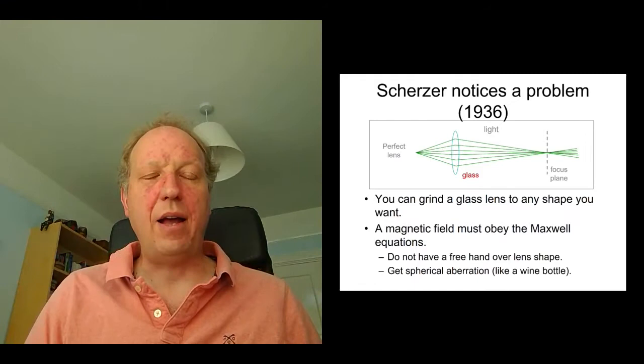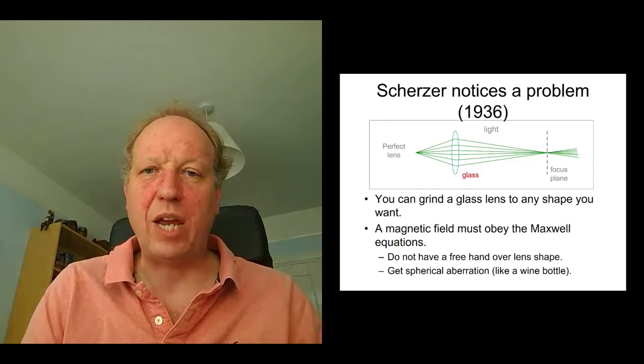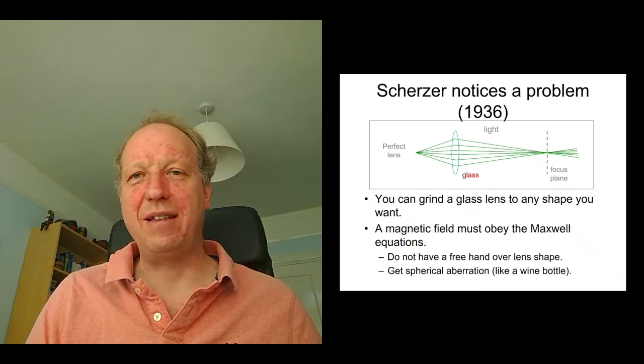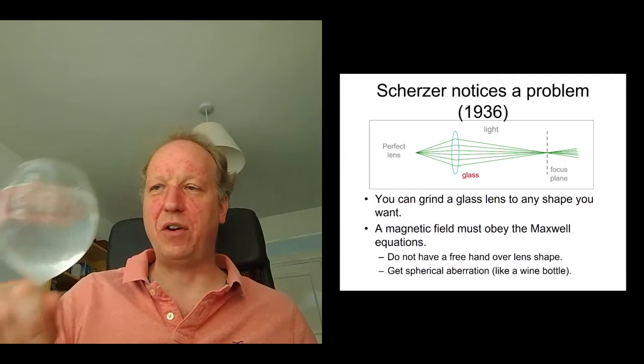And so what that means is because we can't have an arbitrarily shaped magnetic field, they always have to obey these laws of physics, we get bad aberrations. We get actually a lot of spherical aberration. And often spherical aberration is likened to, say, using a wine glass. And here, actually, I've got a wine glass rather large one. There's only water in it, sadly.